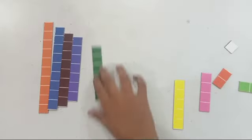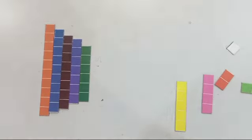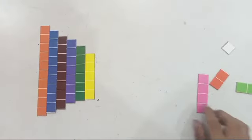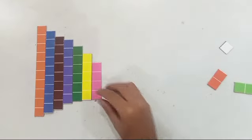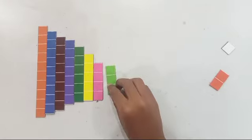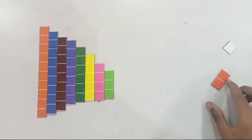3rd one is dark green, this is 6 steps. 4th one is yellow, this is 5 steps. 5th one is pink, this is 4 steps. 5th one is dark green, this is 3 steps.